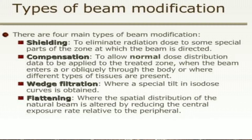In shielding, we use to eliminate radiation dose to some special parts of the zone at which the beam is directed. Compensation is used to allow normal dose distribution data to be applied to the treated zone when the beam enters through the body or where different types of tissues are present. In wedge filtration, a special tilt in isodose curve is obtained, and in flattening, the spiral distribution of the natural beam is altered by reducing the central exposure rate related to the peripheral.